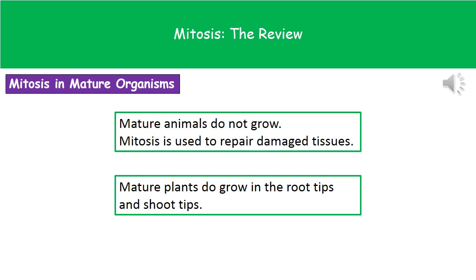However, if we think about plants, a mature plant is still going to continue to grow. So we're going to be using mitosis not only to repair damaged tissues, but also to allow it to grow in two specific areas of the plant: firstly the root tips, and secondly the shoot tips.